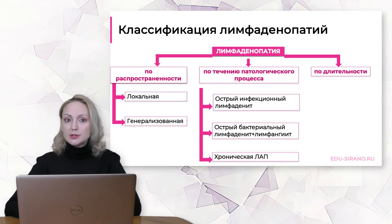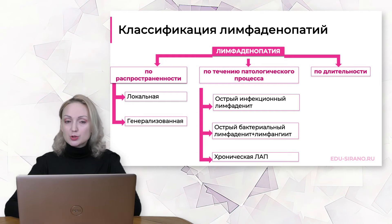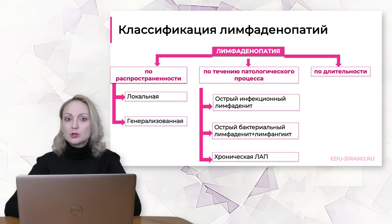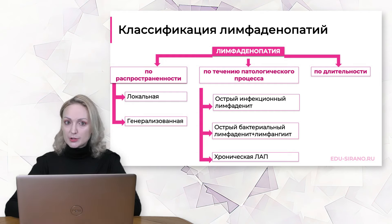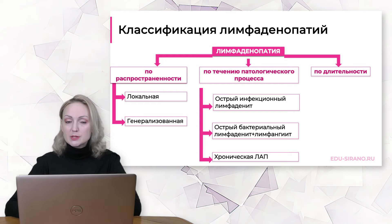При лимфадените у пациента будут признаки острого воспаления узла. В ряде случаев будет флюктуация, что уже является процессом, требующим как минимум антибактериальной терапии, а как максимум – хирургического лечения, в зависимости от клинической ситуации. Если ребенок пришел с увеличением лимфатического узла несколько недель назад и классических признаков лимфаденита нет, это называется лимфаденопатией.